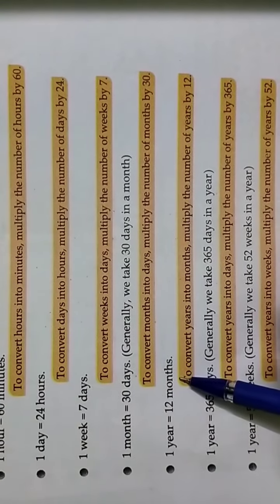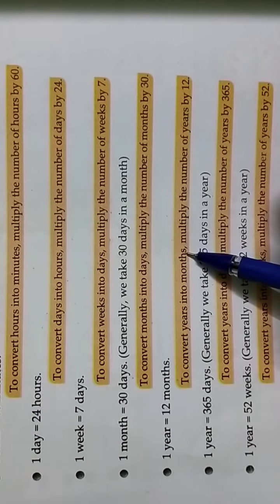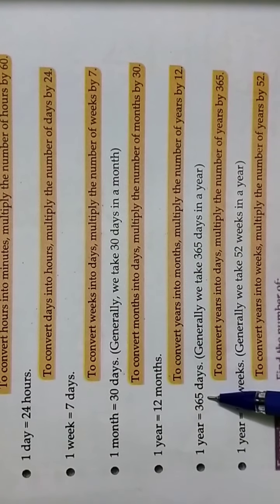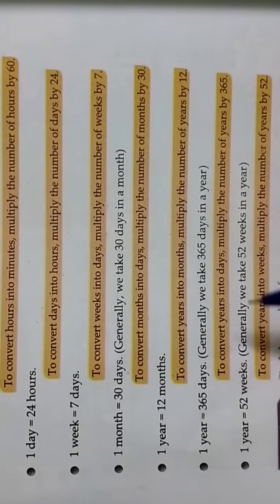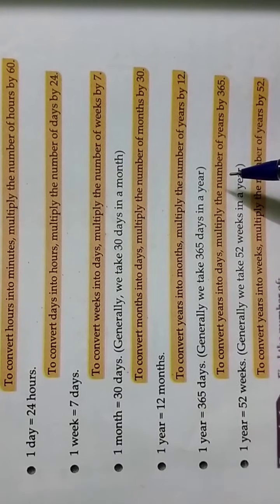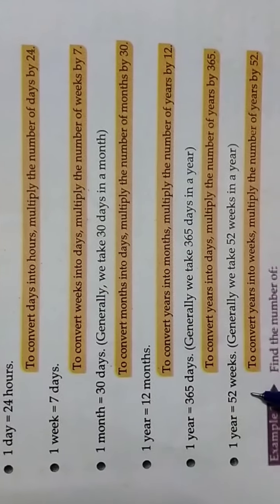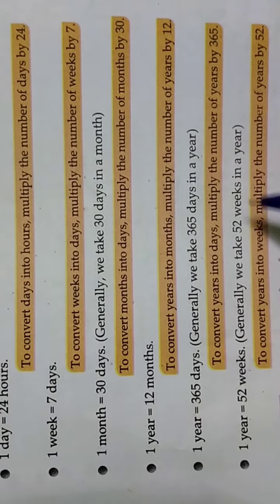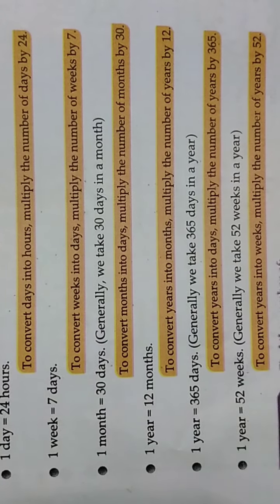1 year equals 12 months, so to convert years into months, multiply by 12. 1 year also equals 365 days — leap year has 366 days, but normally we take 365 days. So to convert years into days, multiply by 365. And 1 year equals 52 weeks; to convert years into weeks, multiply by 52.